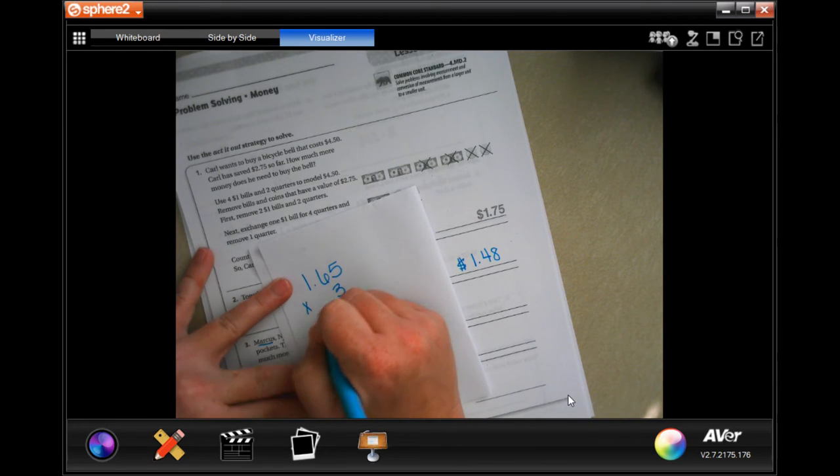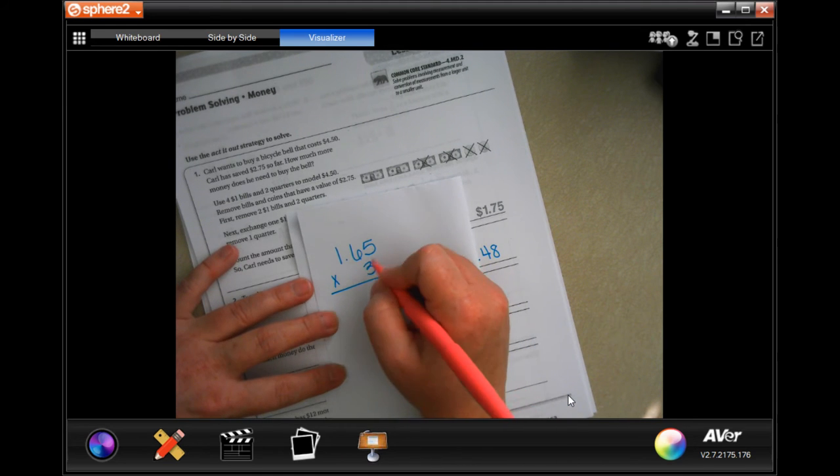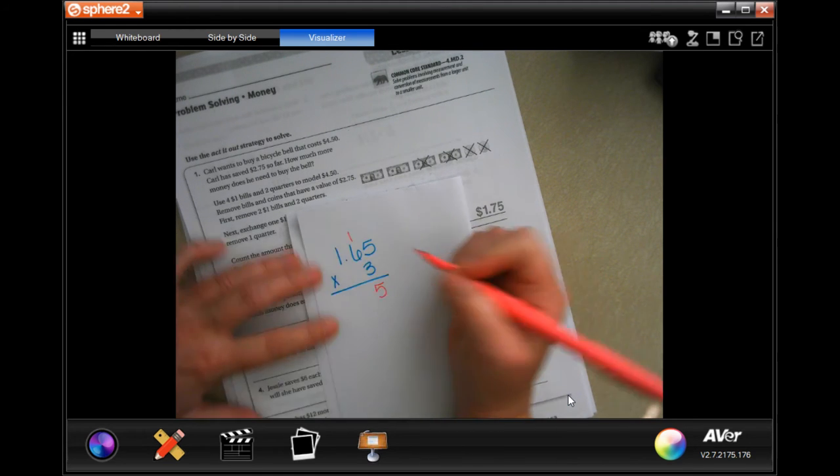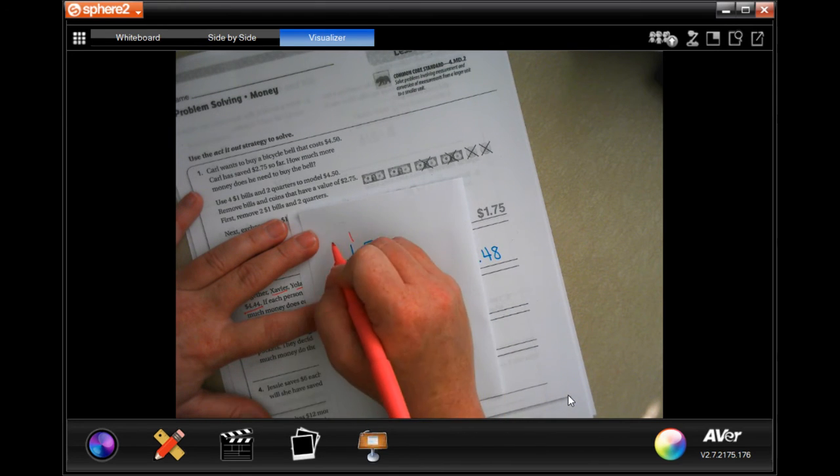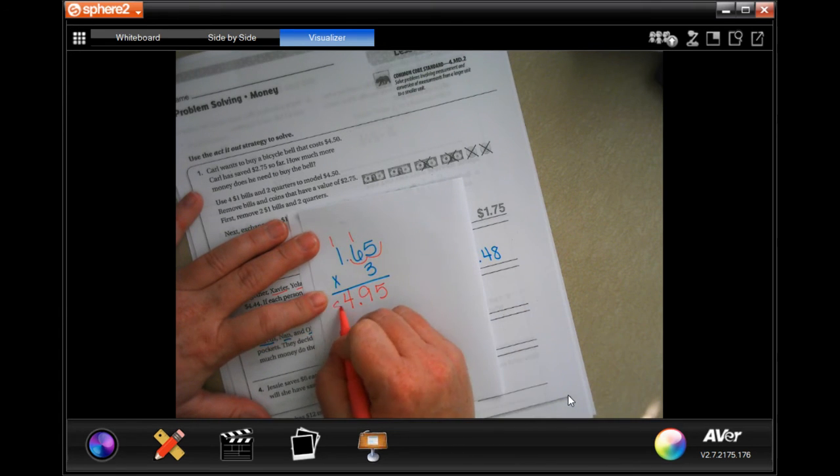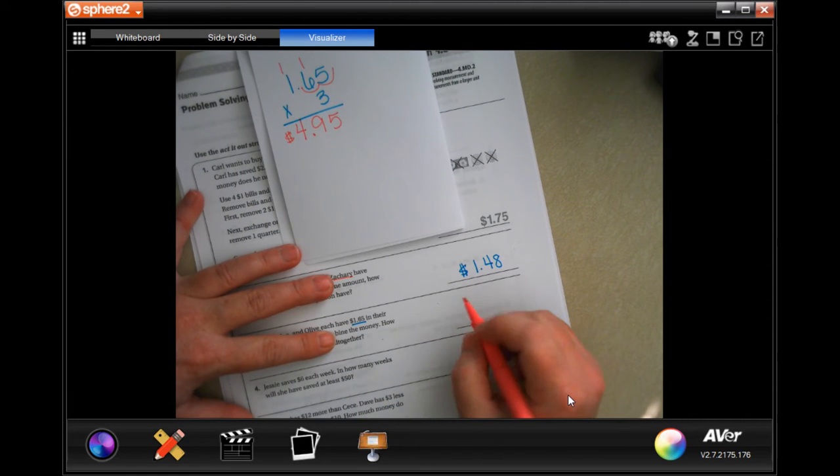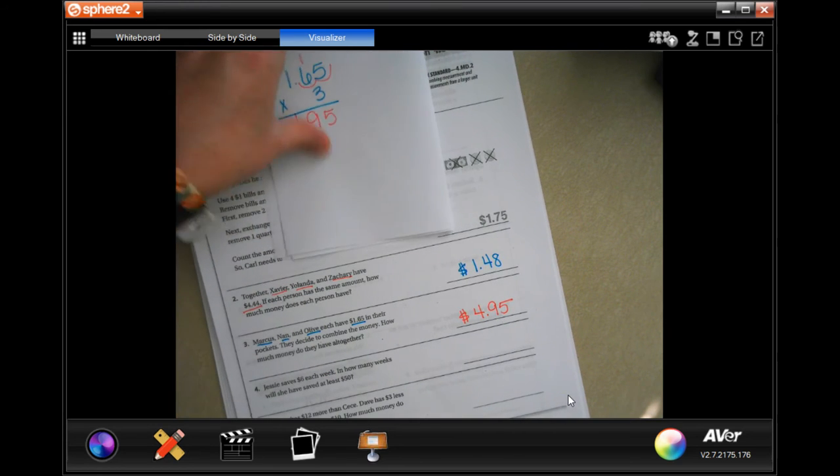Now three times five is fifteen, carry that one. Three times six is 18 plus one is 19, carry the one. Three times one is three plus one is four. And we're going to go in one two times, four decimal. Four dollars and ninety-five cents.